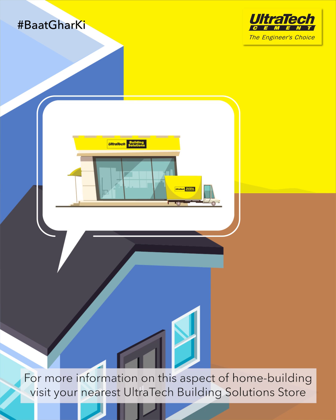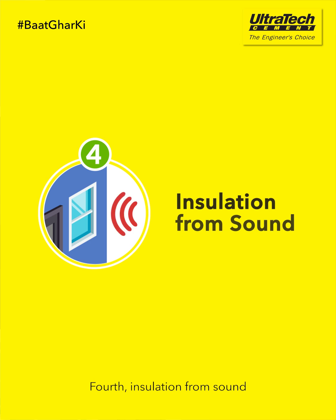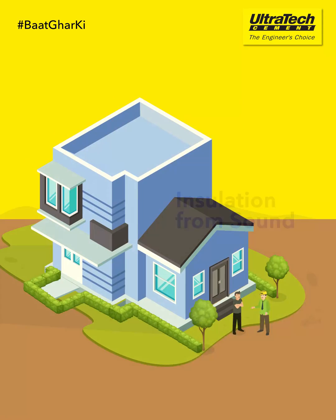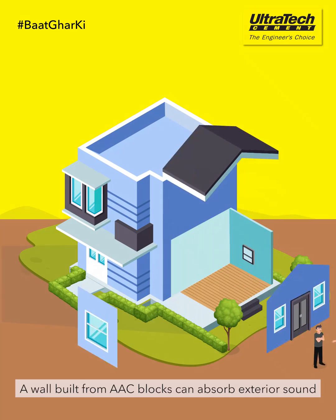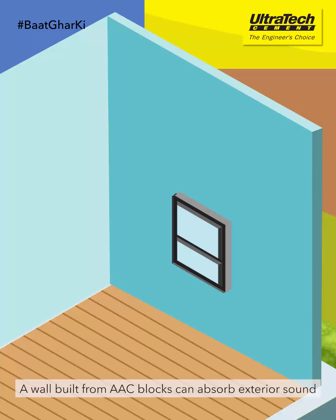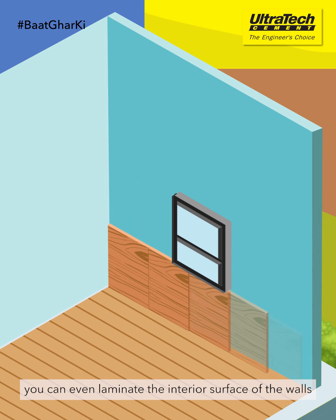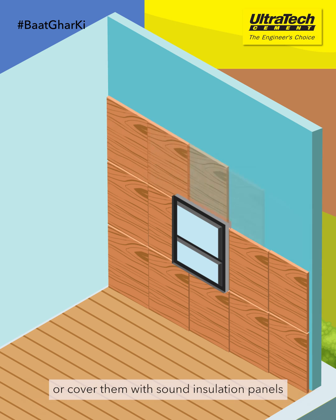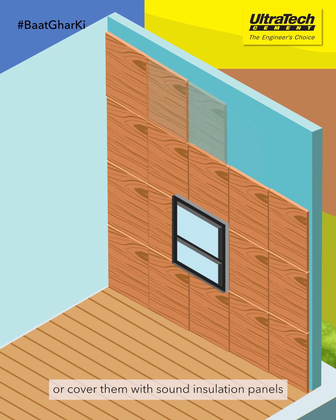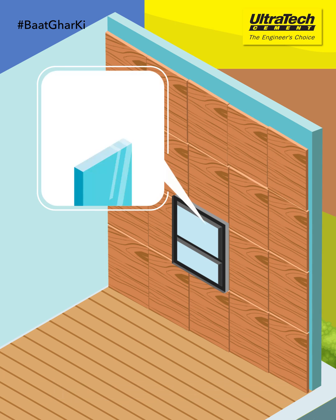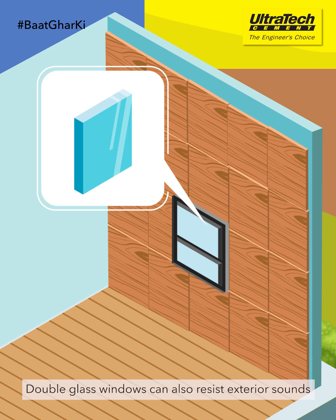For more information on this aspect of home building, visit your nearest Ultratech building solution store. Fourth, insulation from sound. A wall built from AAC blocks can absorb exterior sound. You can even laminate the interior surface of the walls or cover them with sound insulation panels. Double glass windows can also resist exterior sounds.